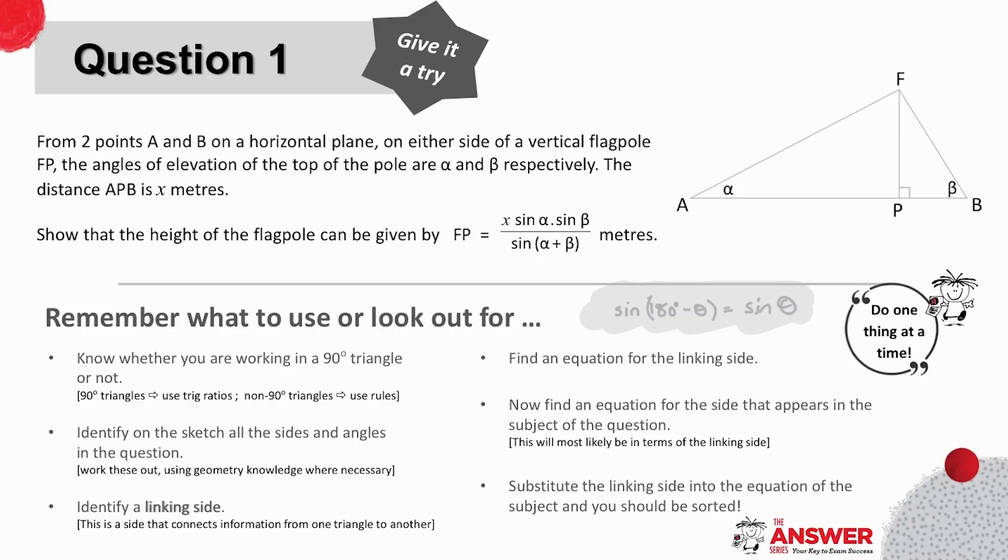So from two points A and B on a horizontal plane, on either side of a vertical flagpole FP, the angles of elevation of the top of the pole are alpha and beta respectively. The distance APB is X metres. Show that the height of the flagpole can be given by FP equaling this in metres. You can pause the video now to give yourself the chance to read through the question as many times as you need and then give answering it a try.